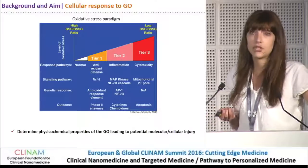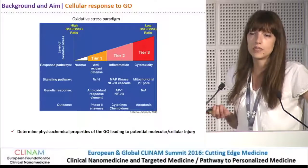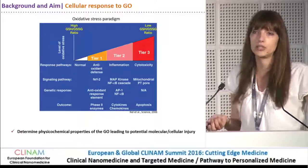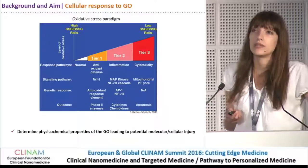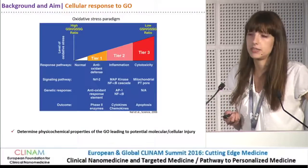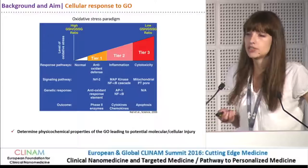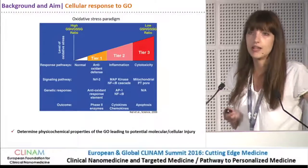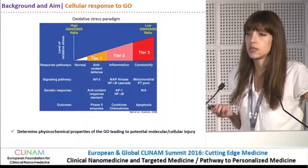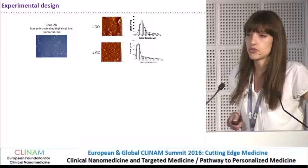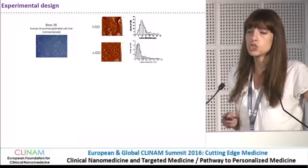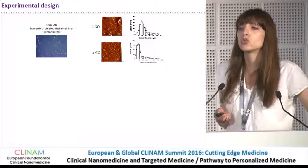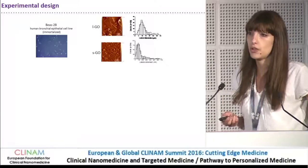As graphene oxide is a new material, it is important to try to correlate with the studies that exist on nanoparticles and other nanomaterials. Our aim was to determine the physicochemical properties of this material that lead to potential molecular and cellular injury. Our first aim was to correlate the cellular responses to the lateral dimensions of the graphene oxide.